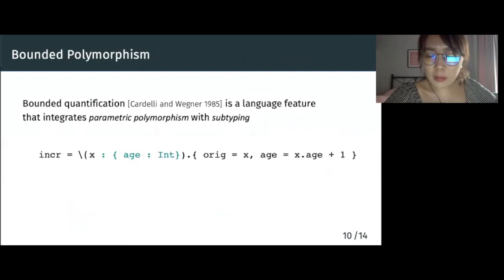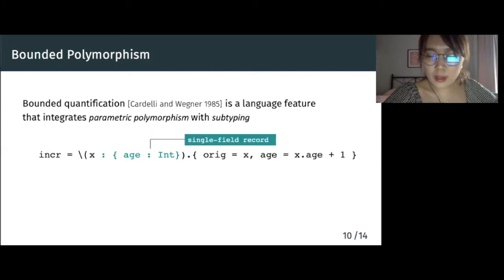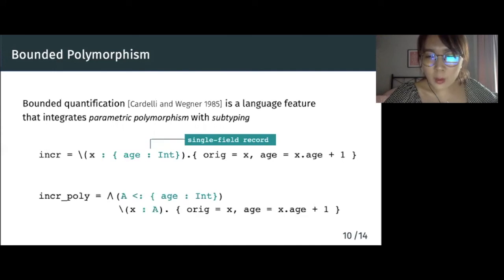Now we switch to the elaboration of bounded quantification. Bounded quantification is a language feature that integrates parametric polymorphism with subtyping. As an illustration of bounded quantification, consider the following definition. The function inc takes a record with field age, stores the original argument, and increases the age. For this particular definition, it only works for a single field record. But it actually works for all records that have an age field of type int. Thanks to bounded quantification, we can formulate a variant of inc, where the upper bound age-int restricts the instantiation of type variable a to be subtypes of age-int.